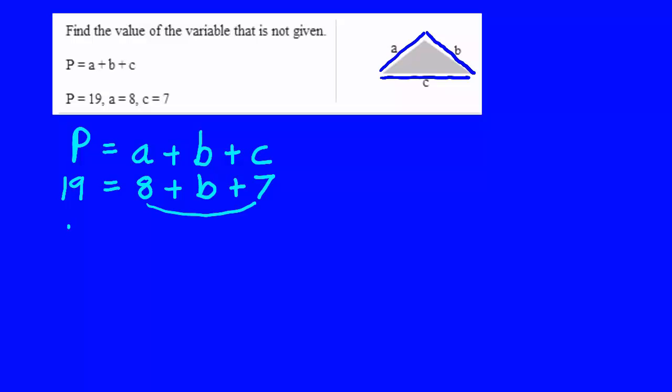Well, 8 and 7 are both constants, so we add them together on the right-hand side before we do anything else. And that gives us 15 plus B on the right-hand side.